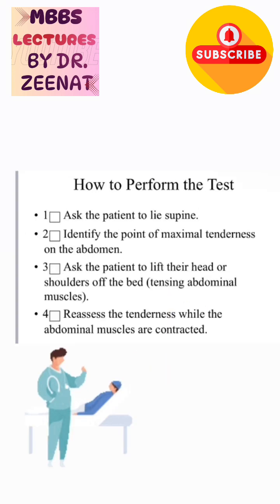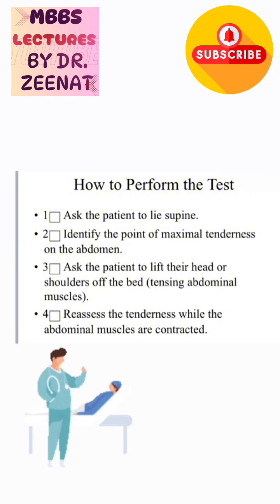How to perform the Carnett test? Ask the patient to lie supine, identify the point of maximal tenderness on the abdomen, then ask the patient to lift their head or shoulders off the bed, thus resulting in tension in the abdominal muscles.